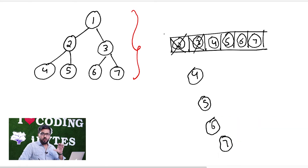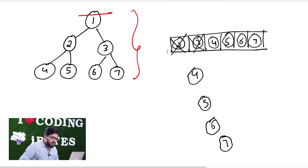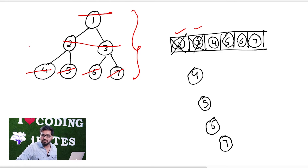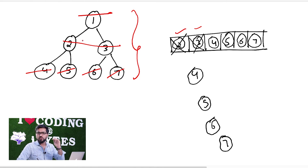Basically, when we use the queue, we first process node 1, then 2, then 3, then 4, 5, 6, 7 — level by level. This is our whole story: we ask level-wise for the number of children and data of each node.